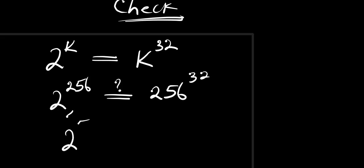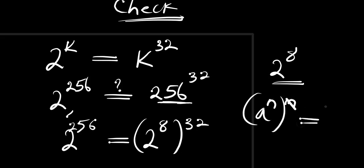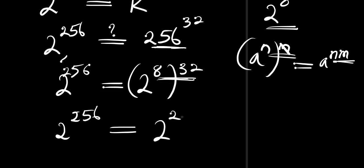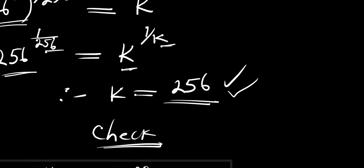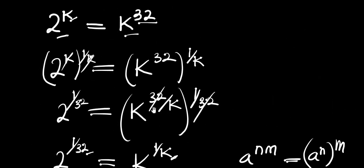We know that 256 can be written as 2 raised to the power of 8, because 2 multiplied 8 times equals 256. So 256 raised to the power of 32 equals 2 raised to the power of 8, times 32, which gives 2 raised to the power of 256. What we have on both sides is the same, which confirms that the answer k equals 256 satisfies the equation. That is it for the video — I believe you enjoyed the class. Please don't forget to subscribe and share this video with your friends. Thank you and goodbye.